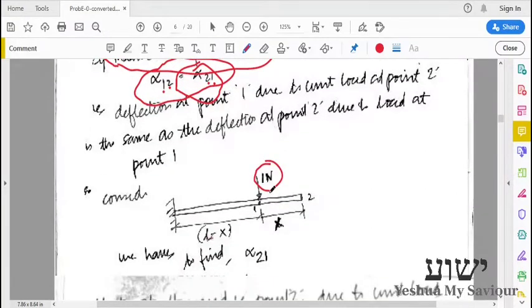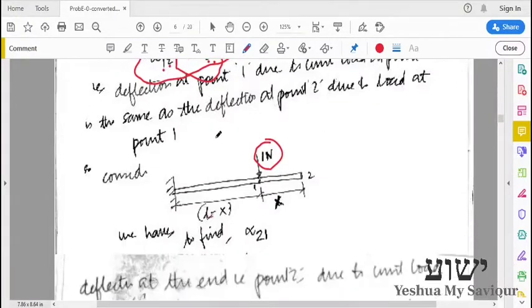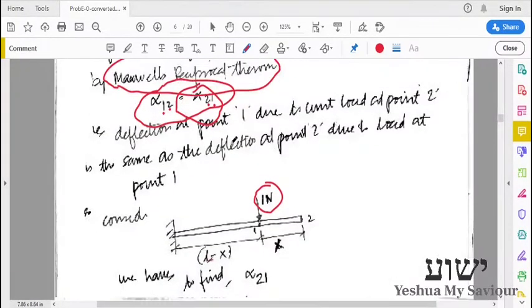And we will calculate the influence number. And then, as these two influence numbers or cross-influence numbers are the same, it will be very easy to find the deflection at point 1 due to load at point 2.